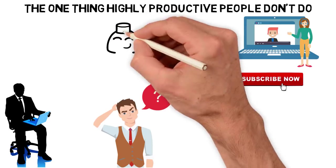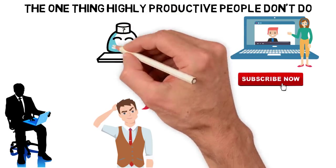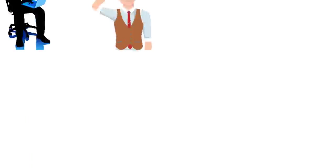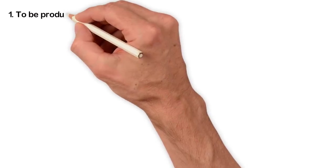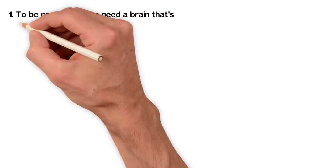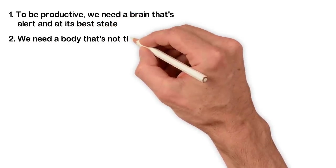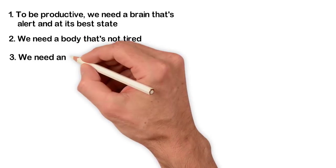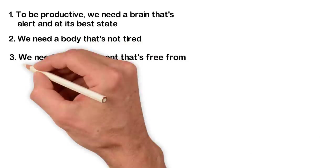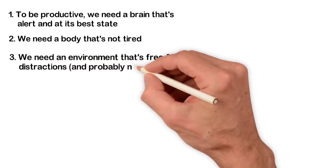Now let's get into it. If we talk about productivity, what do you think we need? First, to be productive, we need a brain that's alert and at its best state. Second, we need a body that's not tired. Third, we need an environment that's free from distractions and probably noise.